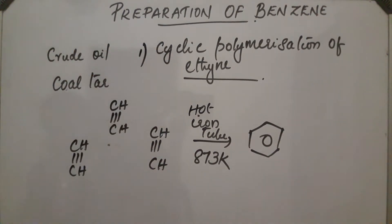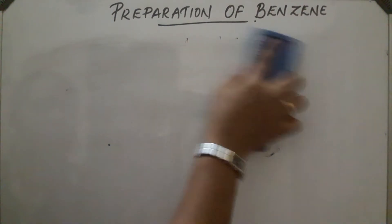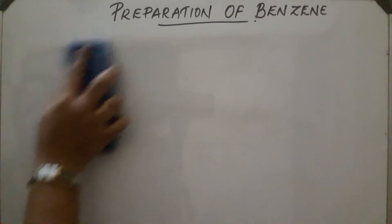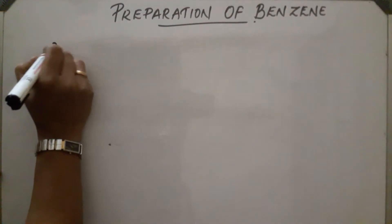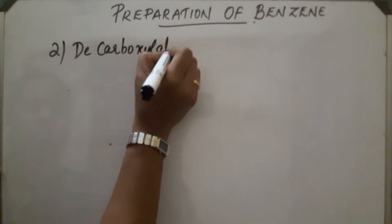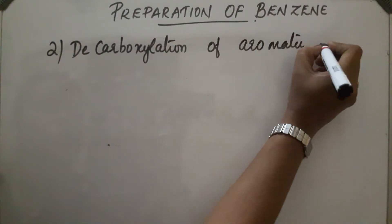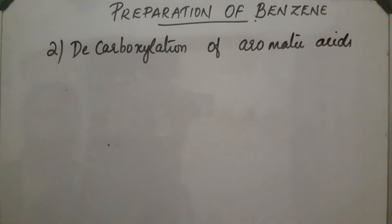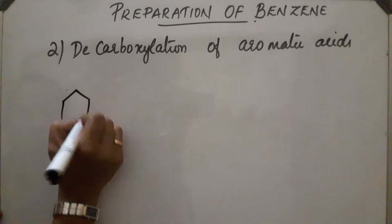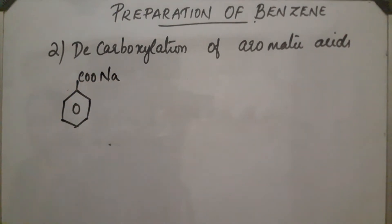The second method is decarboxylation of aromatic acids. The sodium salt of benzoic acid is used in this reaction. This is the sodium salt of benzoic acid.